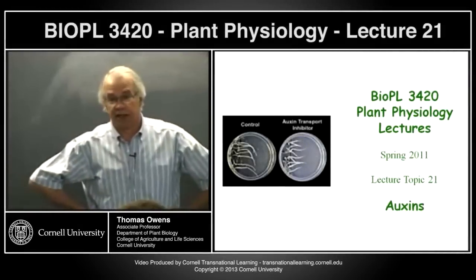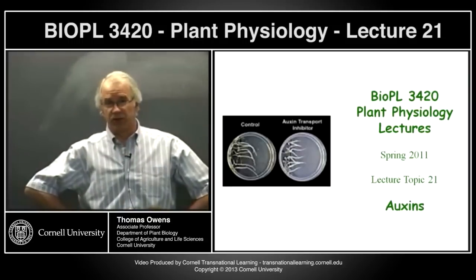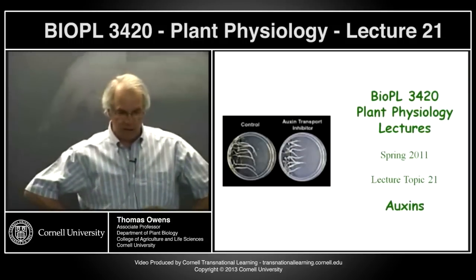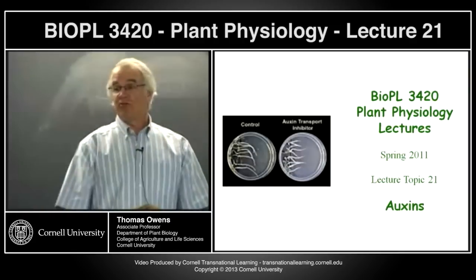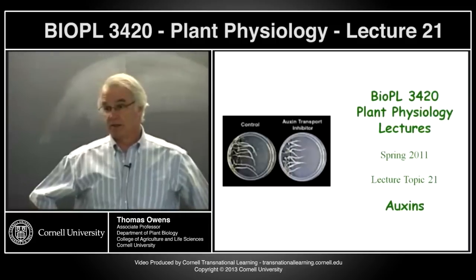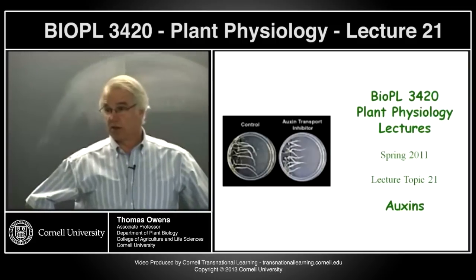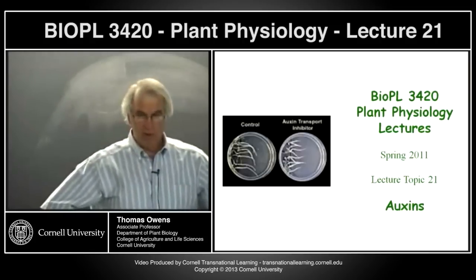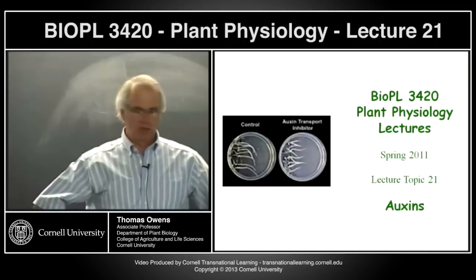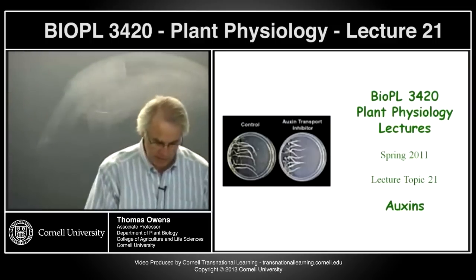We're going to talk about auxins today. Auxins is a good place to start because it's really the first plant hormone that was discovered. It's also probably the most complicated one. Don't get lost in the details of all the various things that auxins do, because you can look them up. Apical dominance is probably one that you should have a good idea of, because it's one that we understand reasonably well.